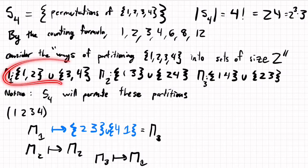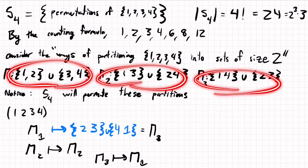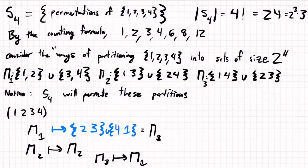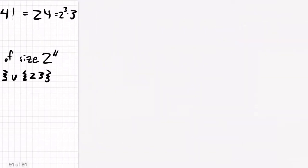What's interesting is here, now we have a set of three different elements that's acted on by S4. But each element of S4 gives us a permutation of these partitions, which is exactly an element of S3. So what we have is a morphism S4 to S3.